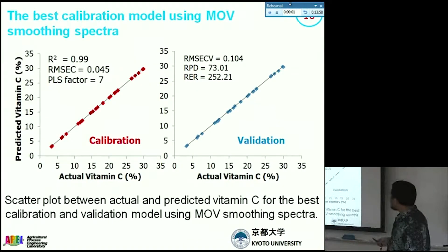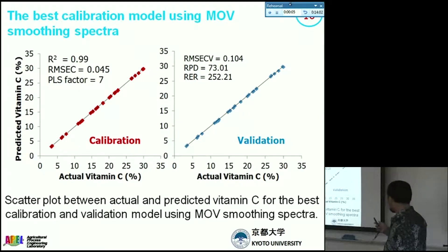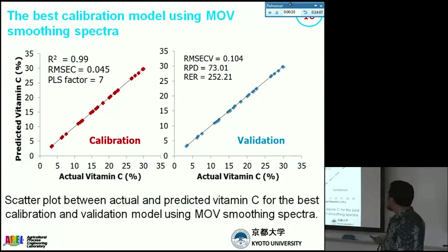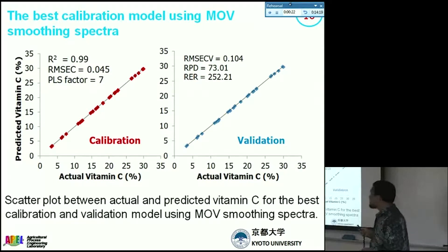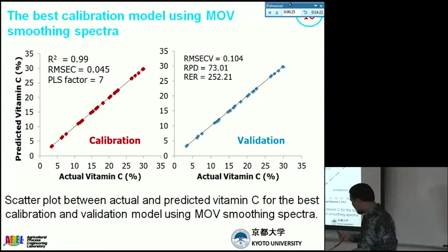This scatter plot shows the actual versus predicted values for the moving average best model. We tested using a 95% Student's t-test, and there is no significant difference between actual and predicted values. So we can use this model to calculate vitamin C concentration using the moving average spectrum.